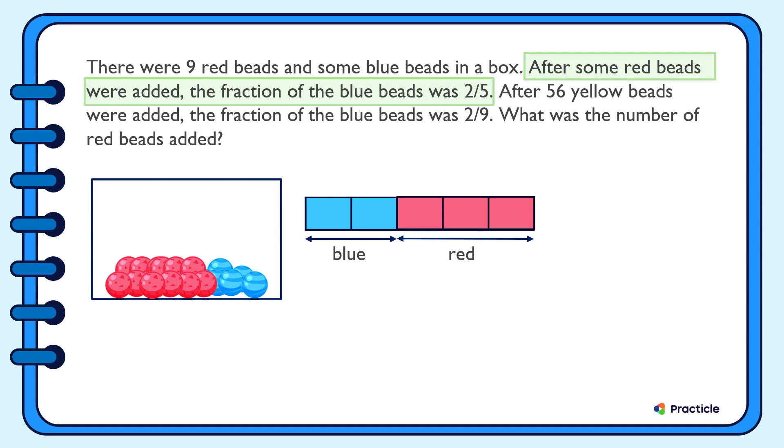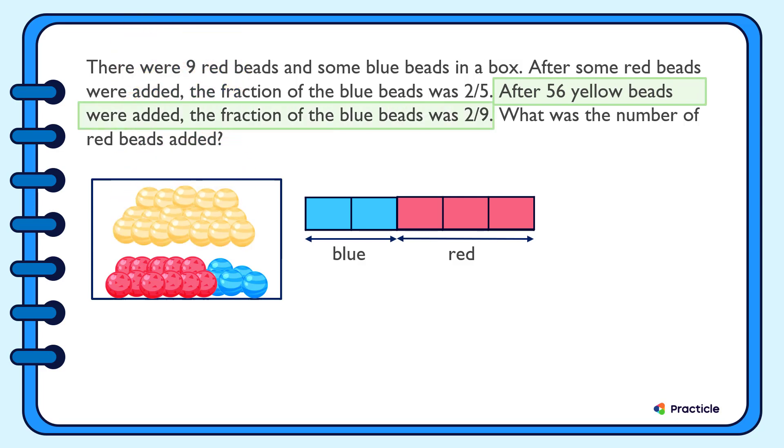Next, let's see what else we are given. After 56 yellow beads were added, the fraction of blue beads was two-ninths. Do you know what we should do to our model now? What happens to the number of red and blue beads after 56 yellow beads were added? Well, nothing happens, right? The number of red and blue beads are still going to be the same.